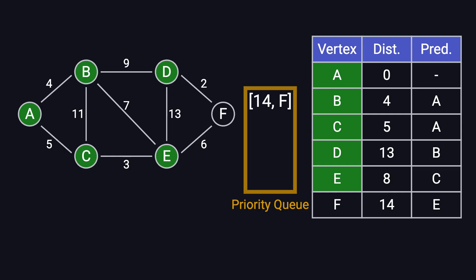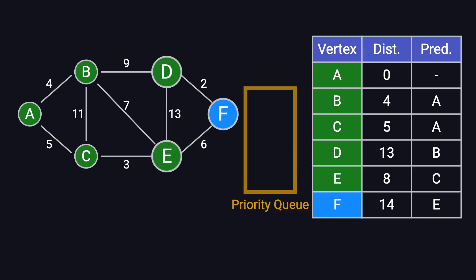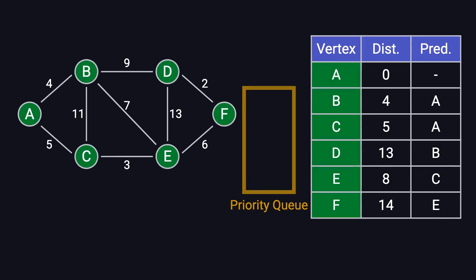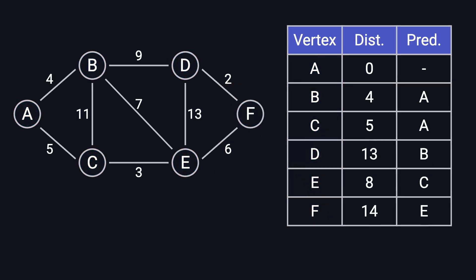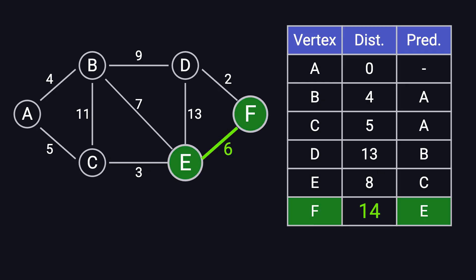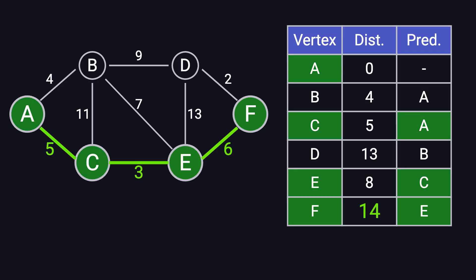Now, the only remaining node in the queue is F. We process it, but since all its neighbors are already processed, nothing changes. F is now marked as processed, and the algorithm is complete. At the end, we determine that the shortest distance from A to F is 14. To reconstruct the shortest path, we backtrack using the predecessor table. F's predecessor is E, E's predecessor is C, and C's predecessor is A. So, the shortest path is A to C to E to F, with a total distance of 14.